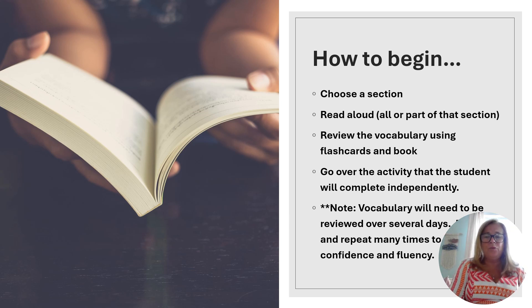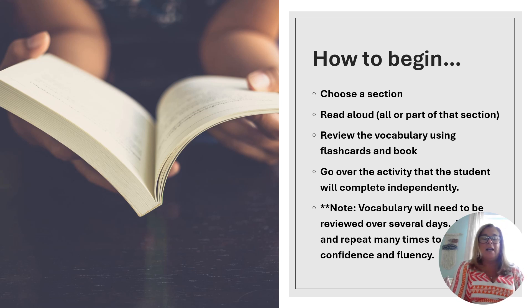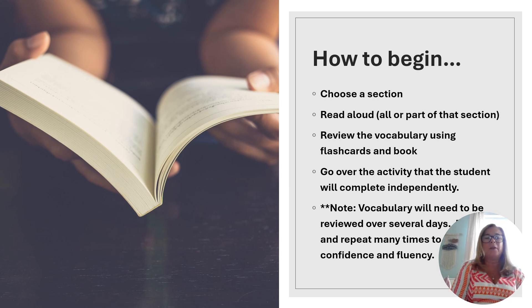Once you're ready to begin using the book, you will choose a section or theme to focus on. You would read it aloud with your student — a part of the section or the entire section. You would review the vocabulary using the flashcards you've prepared, and the book of course has lovely visuals. Then you would go over the activity that the student will complete independently. It is important to note that vocabulary will need to be reviewed over several days and repeated many times in different contexts to build confidence and fluency.